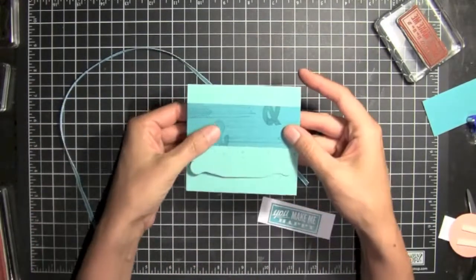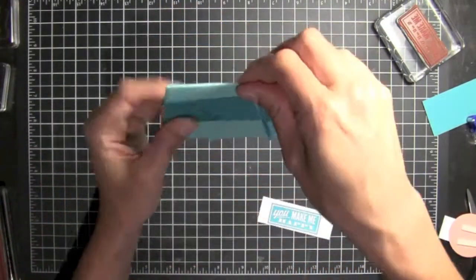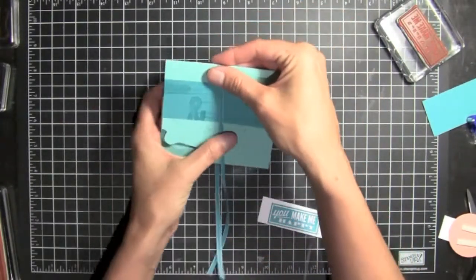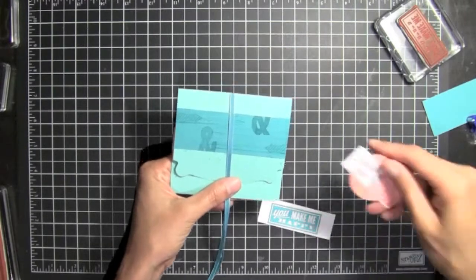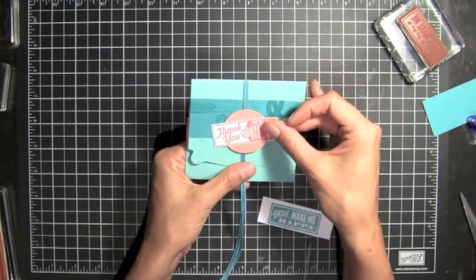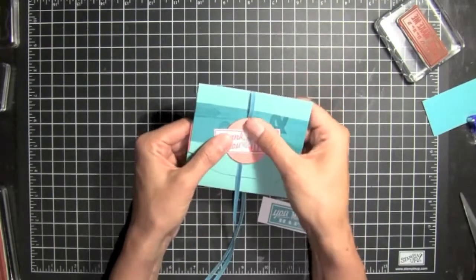But before we do that, we'll go back to wrapping the ribbon around it. So I've got a piece of Bermuda Bay taffeta ribbon. And I'm just going to place it in the middle here. And then I'm going to use the dimensionals that I've placed on this piece to hold it in place. So we'll kind of have fun and place this like this.